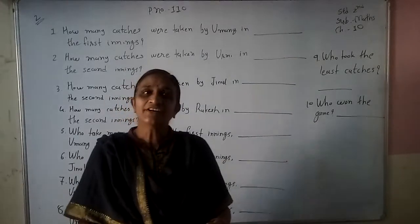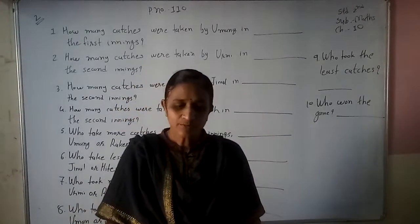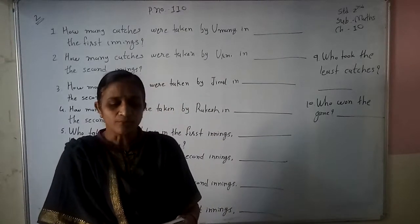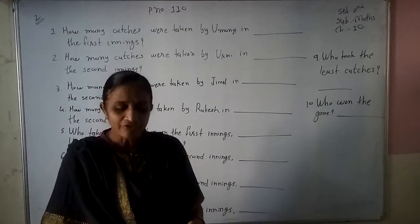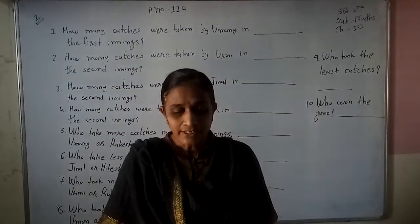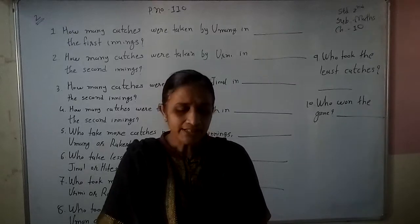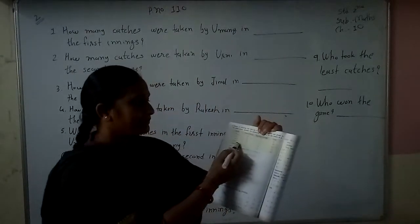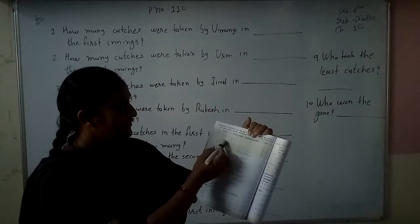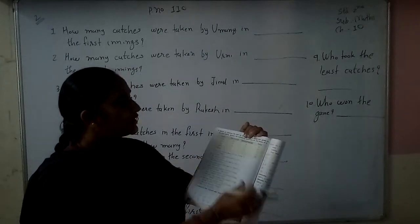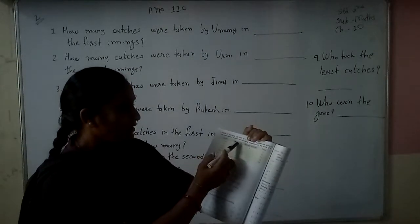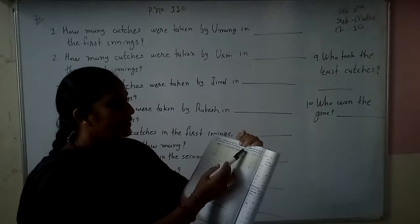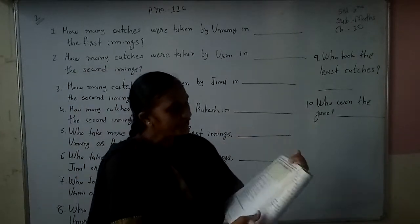Page number 110, question number 2. Details of catching the ball by 5 friends in a game. We want to fill in the table below. We have a table where 5 friends' catches are recorded across the first inning, second inning, and total. Answer the following questions on the basis of this table.